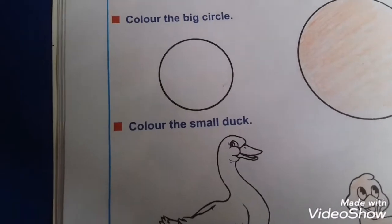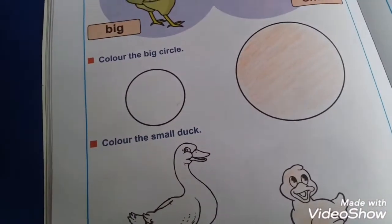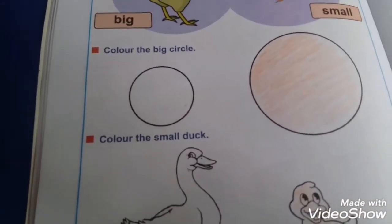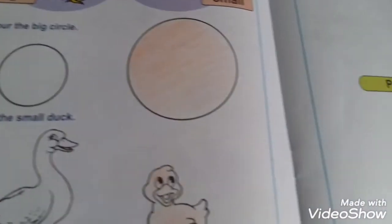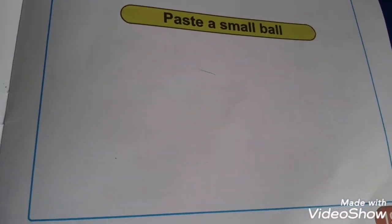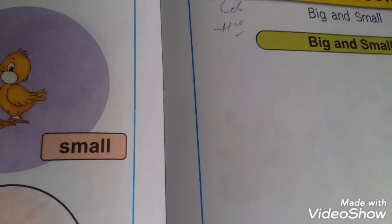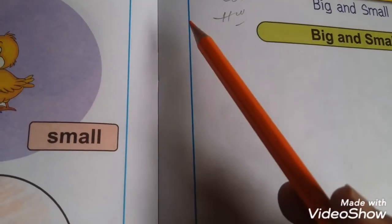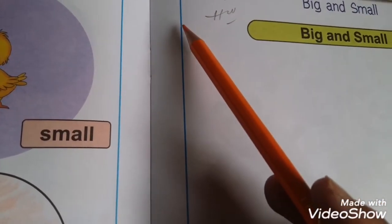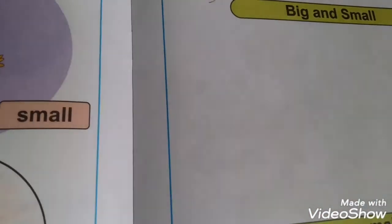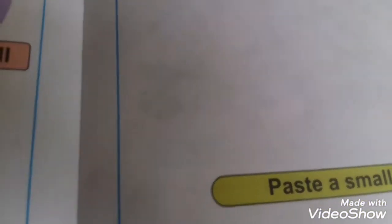Now you understand about big and small. Now, page number 19. This is page number 19. You are looking — I mentioned here homework. This page you will complete at your home. This is the homework page.